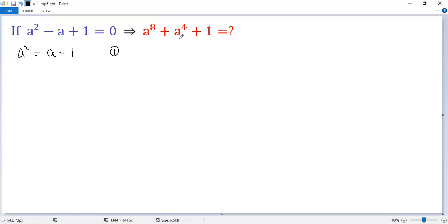Our target is to identify A to the power of 4 and A to the power of 8. So we square both sides. We get A squared and then squared equals A minus 1 squared. We know that equals A to the power of 4.